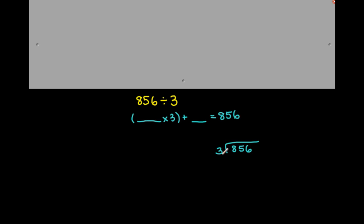So typically a person would say we're dividing 856 by 3. The number that you are dividing by is called your divisor — that always goes outside. The number that you are dividing is called your dividend, and this goes on the inside of the division symbol.